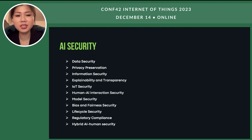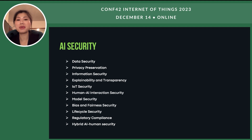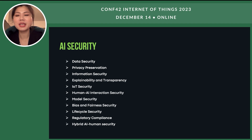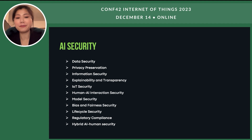Additional AI security areas include human-AI interaction security and model security. With the explosion of AI technology, more and more models will be launched, so model security is critical. And for bias and fairness — we are human beings living in a world with different cultures, civilizations, and religions. Machines are just boxes trained by humans. We must ensure bias and fairness cannot be exploited for malicious purposes. There is also lifecycle security and regulatory compliance, and hybrid human-AI security.